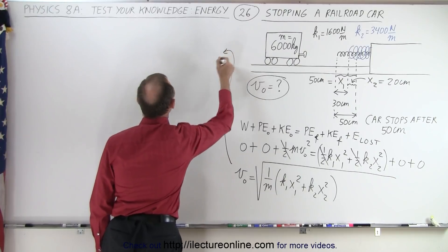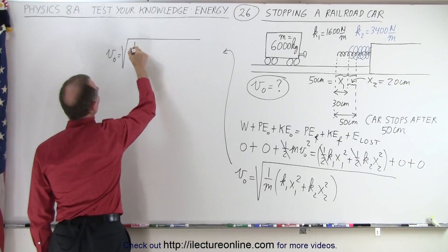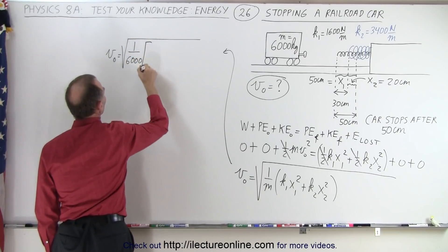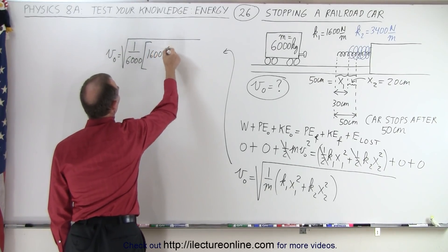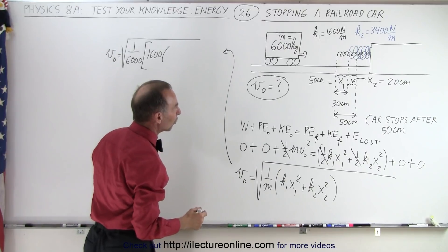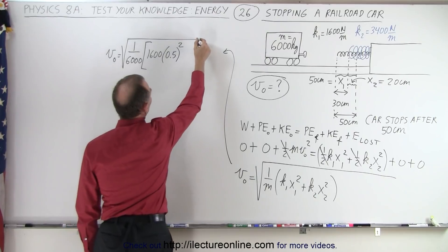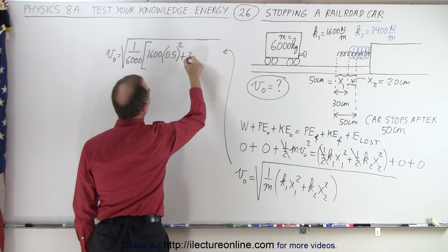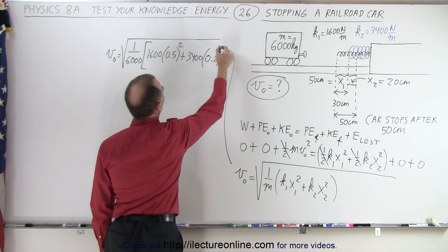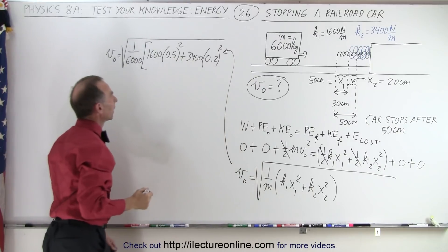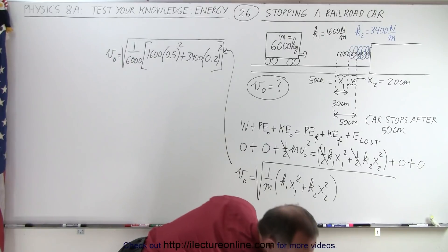So coming over here where we have more room: v initial equals the square root of 1 over m, which is 1 over 6000, times k1, which is 1600, multiplied times x1 squared. And x1 is going to be 0.5 meters squared because we have to convert to meters, plus the second spring which has a spring constant of 3400 times 0.2 squared. And I guess I should close the bracket. There we go, now we're ready to calculate that velocity.